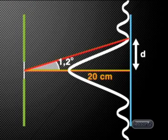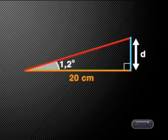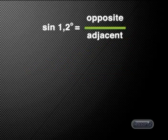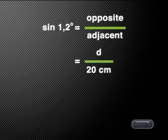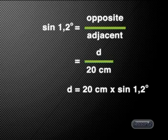See if you can solve this problem. If the distance between the slit and the screen is 20 cm, what is the distance d between the central bright patch and the first dark fringe? Let's work through this problem together. In this right-angled triangle, the length d is opposite to the angle theta 1, so we can use the sine function to find it. We know that the sine of an angle is equal to the opposite side of the triangle divided by the adjacent side. So the sine of 1.2 degrees is equal to the length d divided by 20 cm. We use this equation to solve for d and find that the distance between the central bright patch and the first dark fringe is 0.42 cm.